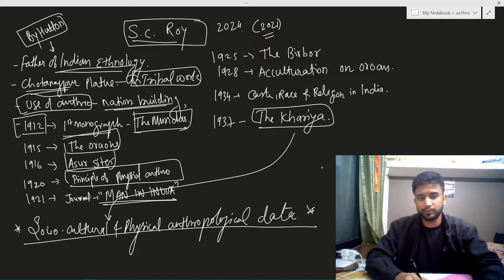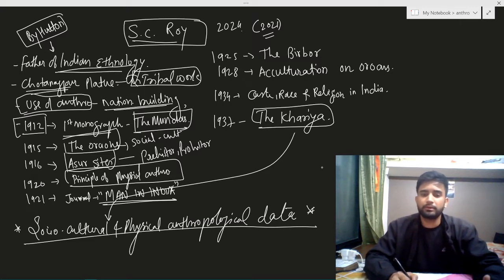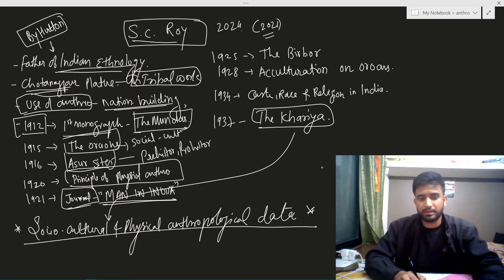These studies, the Oroan and Assur studies, were helpful in streamlining the prehistoric and proto-historic events. The Oraons study focused on social and cultural life, while the principles of physical anthropology helped understand anthropology better. He established the journal called Man in India.